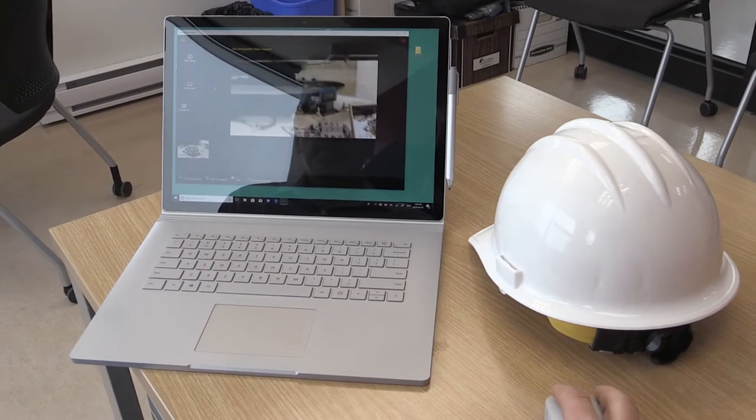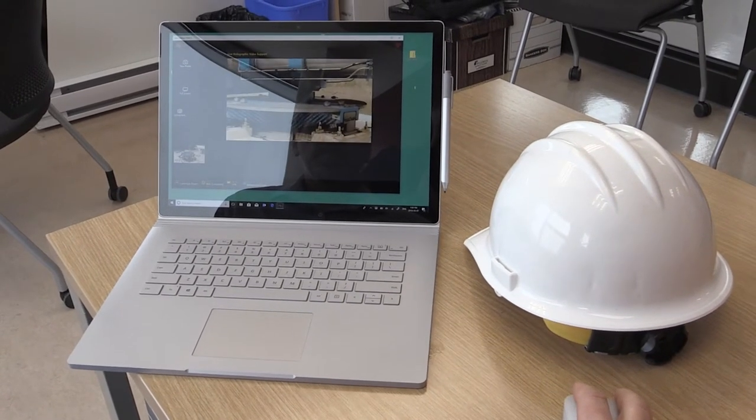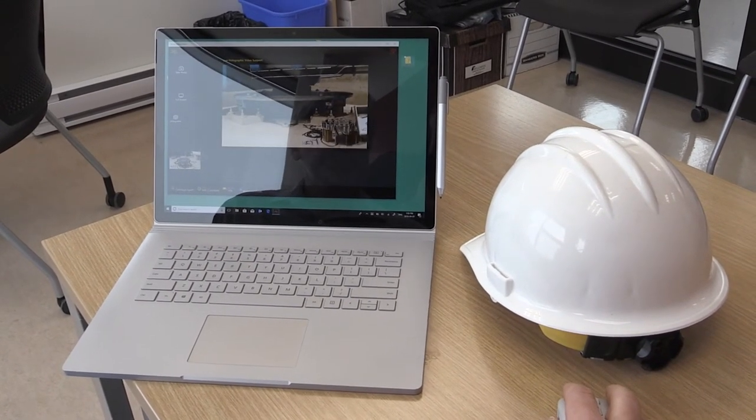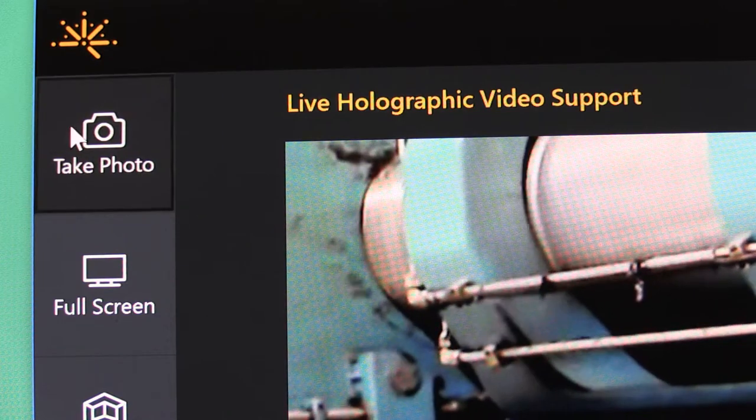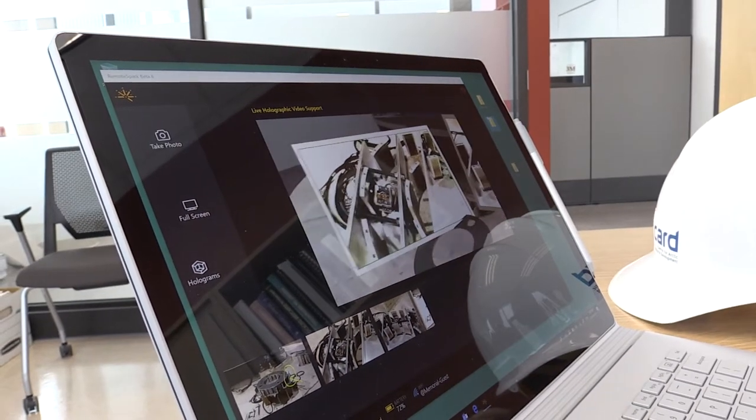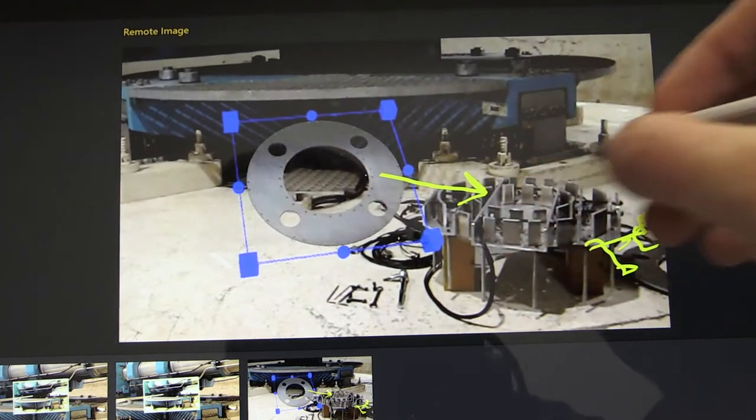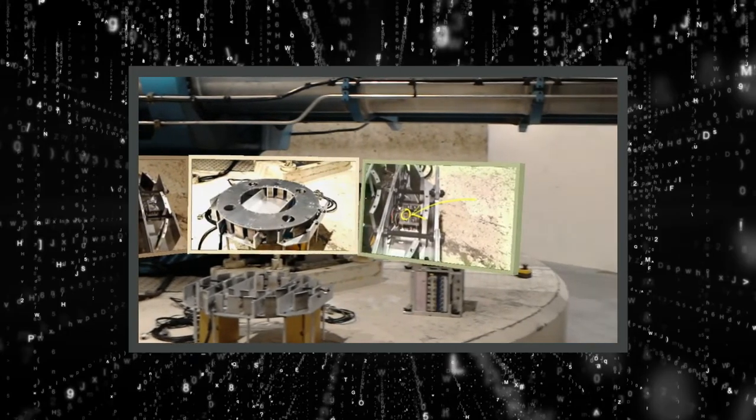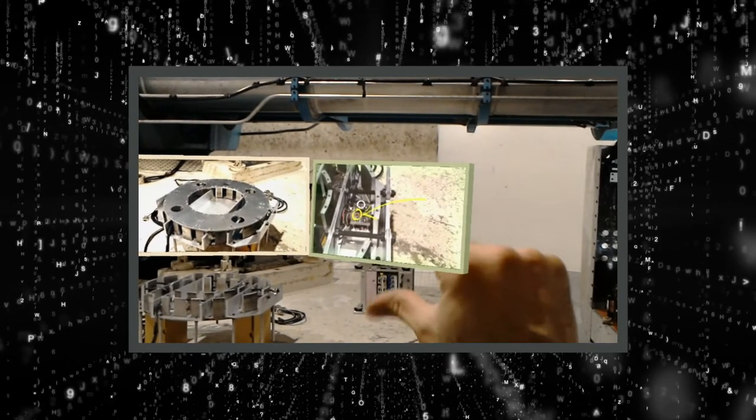The subject matter expert can then see what the on-site worker sees. It is also easy to capture images from the live feed and have the expert annotate the images. These marked up images are then viewable by the user with the HoloLens.